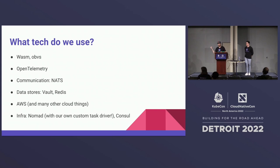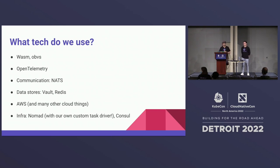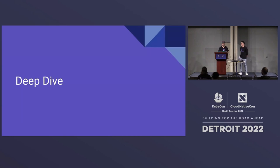What tech do we actually use? Obviously Wasm. But beyond that, we also use OpenTelemetry. We use NATS for the communication layer. We have various data stores, namely Vault and Redis being the big ones. We use AWS as well as a bunch of other cloud things. And for our infrastructure, we do Nomad with our own custom task driver — we talked about that at HashiConf recently, and it actually just went live on YouTube. And Console. So that's kind of our top stack of what we're doing.